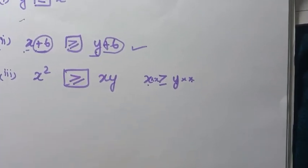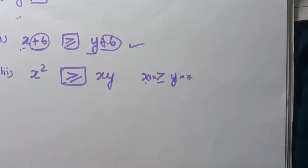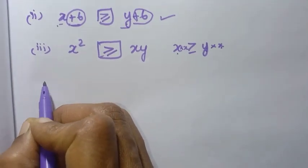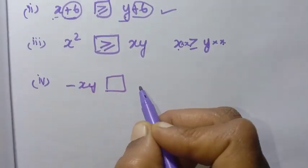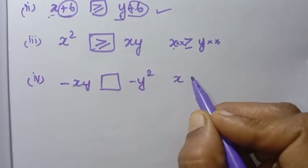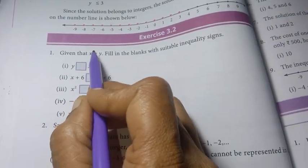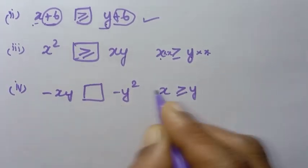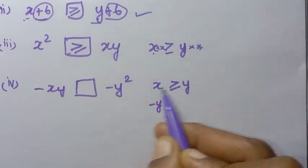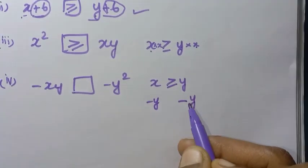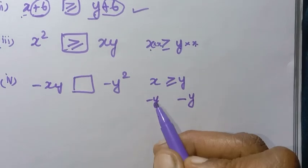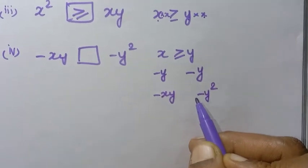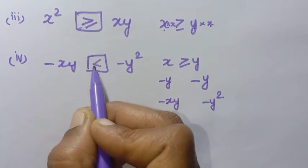Next sum: minus xy box minus y squared. Given x is greater than or equal to y. We multiply both sides by minus y. Since minus y is a negative number, the symbol will change. So minus xy is less than or equal to minus y squared. The rule is: multiplication or division by a negative number reverses the inequality symbol.